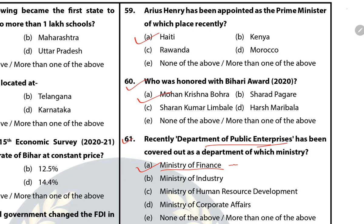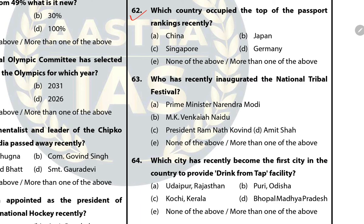Question 62: Which country occupied the top of the passport ranking recently? The answer is B — Japan. Question 63: Who has recently inaugurated the National Tribal Festival? The answer is Venkaiah Naidu. This festival of 2021 was organised from 1 to 15 February in Dilli Haat. Question 64: Which city recently became the first city in the country to provide drink-from-tap facility? The answer is B — Puri, Odisha.